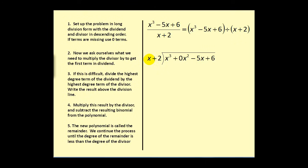Now we ask ourselves: what times x would give us x to the third power? That would be x squared — that's the first term in the quotient. We can also take the leading term and divide it by x, which also gives us x squared. As soon as we put a term up here, we multiply it by the divisor, giving us x cubed plus 2x squared. And remember, we subtract this by adding the opposites — change this to addition and change both signs. The result would be negative 2x squared.